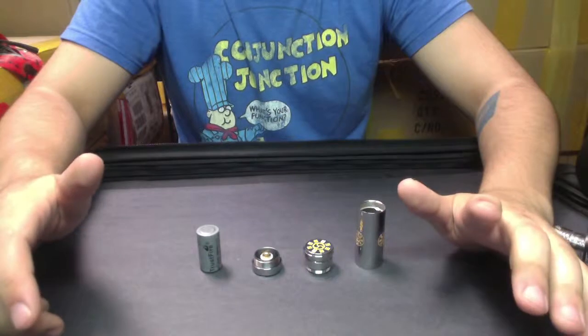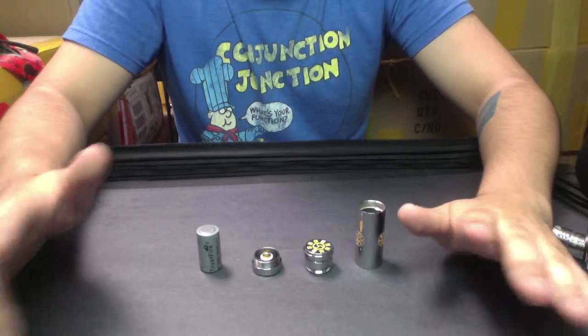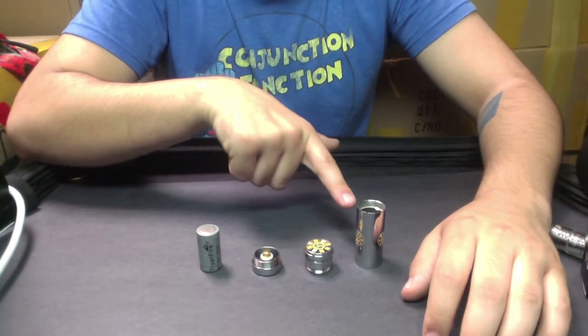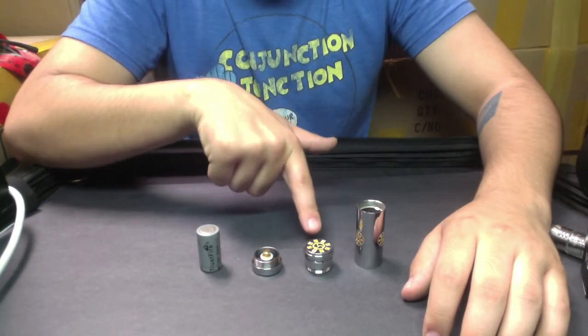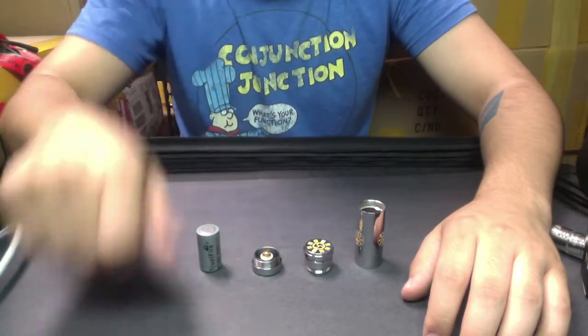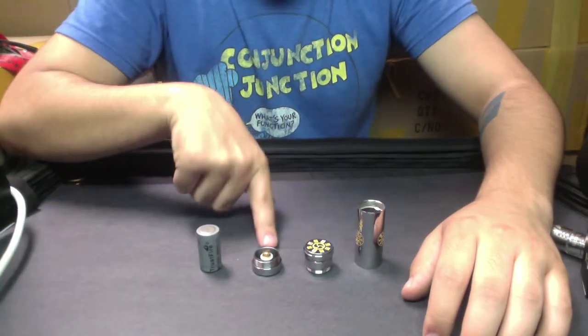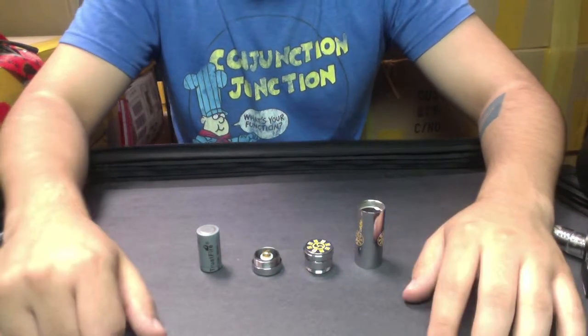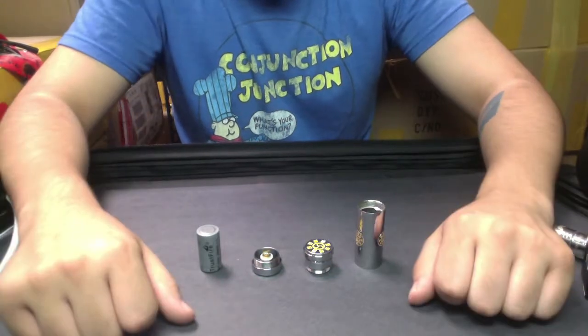I've gone ahead and taken apart the power base. The power base includes the battery chamber, the bottom power button, the top power pin, and the actual battery itself. All of these are going to be demonstrated for you in just a moment, and I will also show you how to assemble the battery.